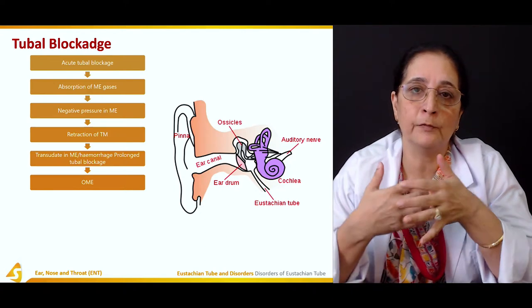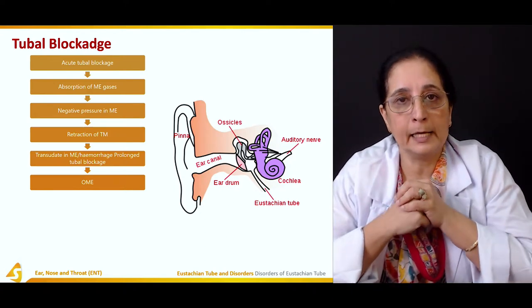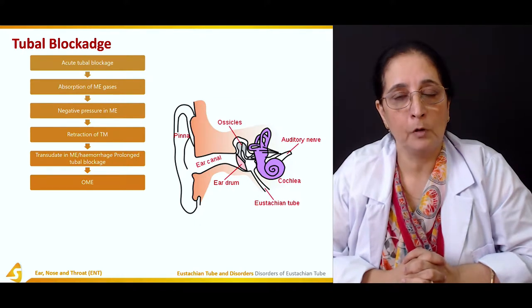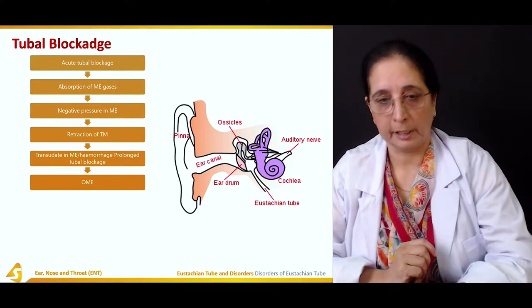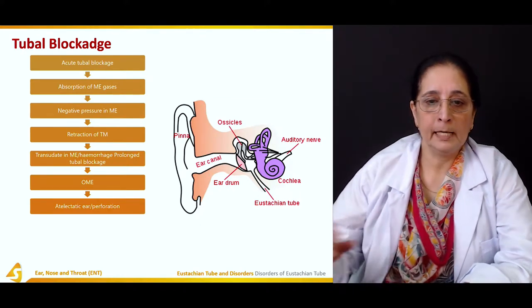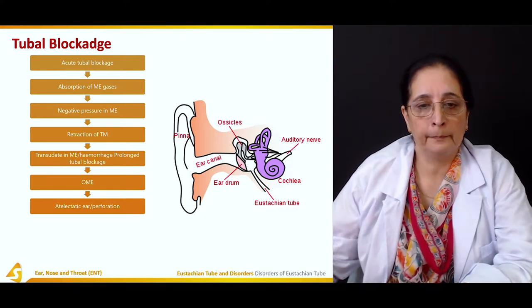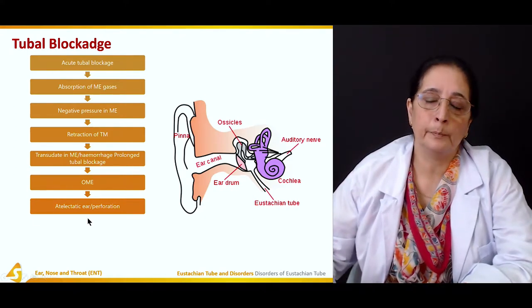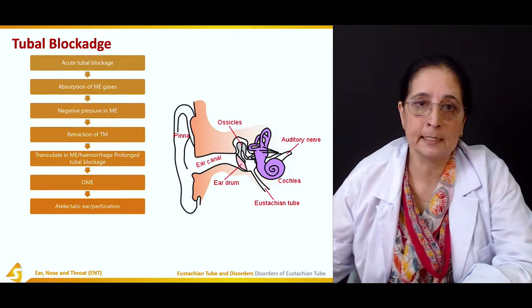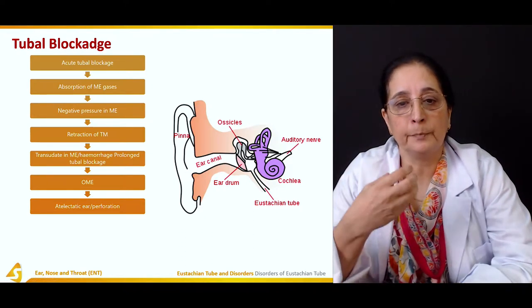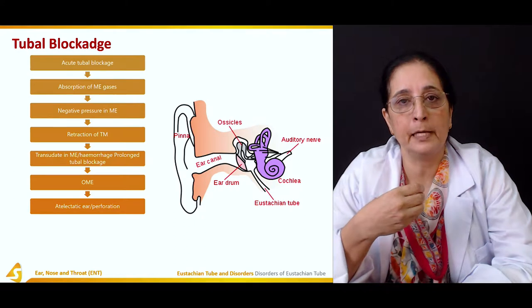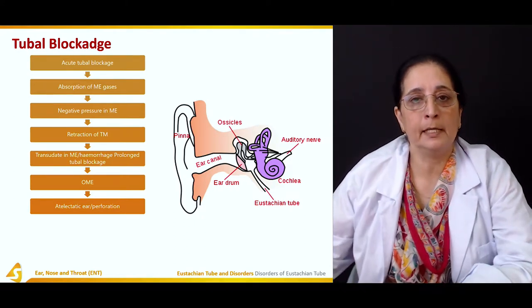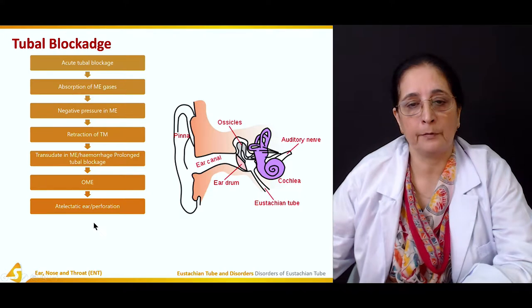With the retraction, there is accumulation of transudate, and that can be hemorrhagic if there is prolonged tubal blockage. This is followed by atelectasis — thick ear or perforation. Atelectasis occurs due to increased pressure on the tympanic membrane and retraction of the tympanic membrane. There can also be perforation.